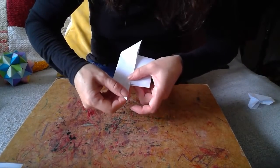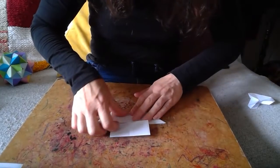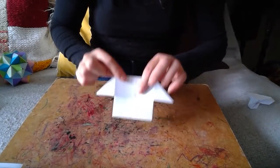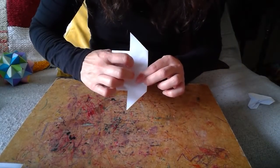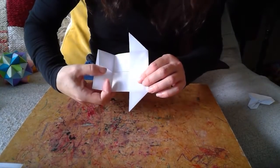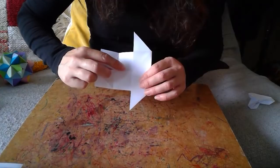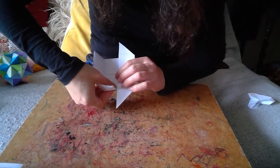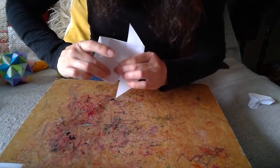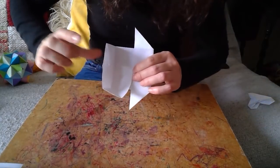I'm going to do the same on the other end. So it should be looking a little bit like a house. I'm going to do the same now on the other side. So opening up the flap.